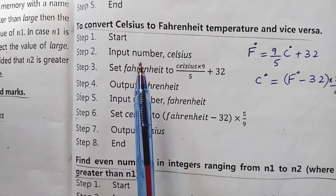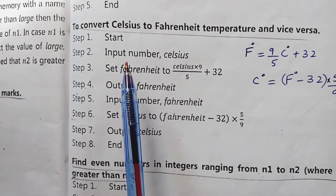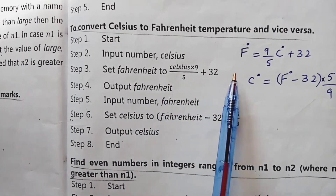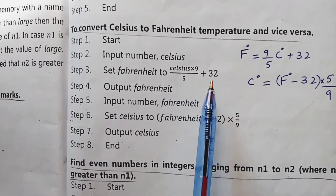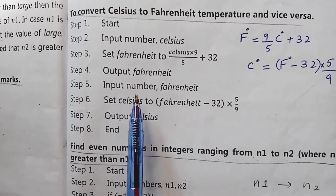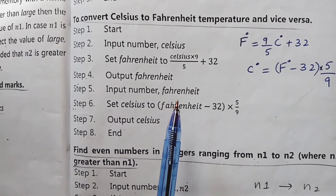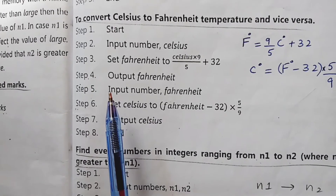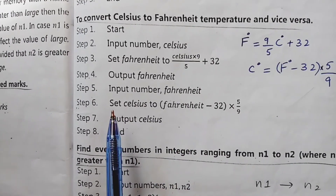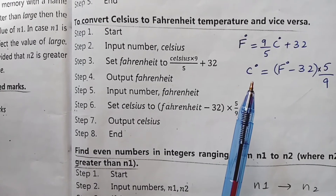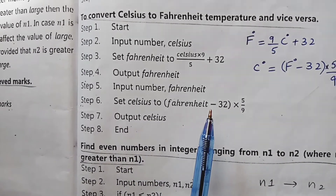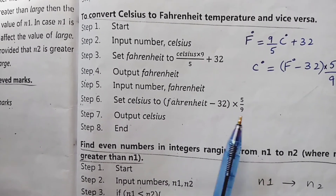Step number 1 is the start of the algorithm. Step number 2, input the Celsius temperature. Step number 3, calculate Fahrenheit using: Celsius multiplied by 9, divided by 5, plus 32. Step number 4, output the Fahrenheit temperature. Step number 5, for the reverse case: input the Fahrenheit temperature. Step number 6, set Celsius to: Fahrenheit minus 32, multiplied by 5, divided by 9. Step number 7, output the Celsius temperature.